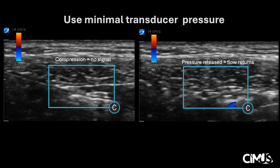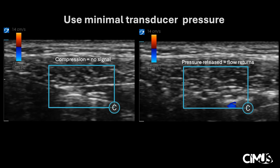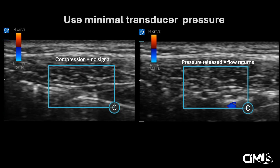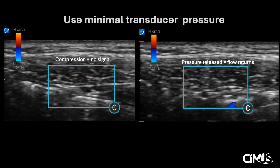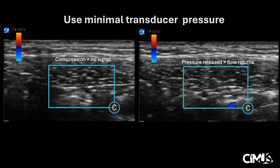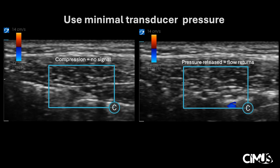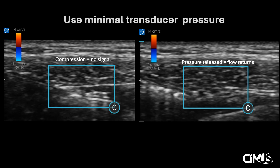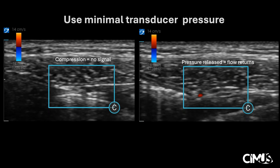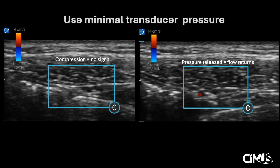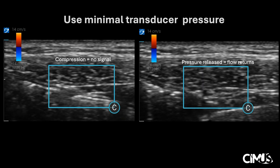Applying too much pressure may compress superficial vessels, tricking us into believing that there are no vessels in the area. On the left, we have a transverse view of the abdominal wall where you could be convinced there are no vessels, given the lack of color Doppler signal. However, the operator is applying significant downward pressure on the abdominal wall with the probe, thus compressing the vessels and resulting in no signal. The same exact view on the right, once the operator releases the pressure allowing the vessels to open up, the signal returns. No settings were adjusted — all that changed was the pressure applied to the probe. Thus, when evaluating an area with a transducer probe, it is important to apply very light pressure so that we are not compressing superficial vessels.